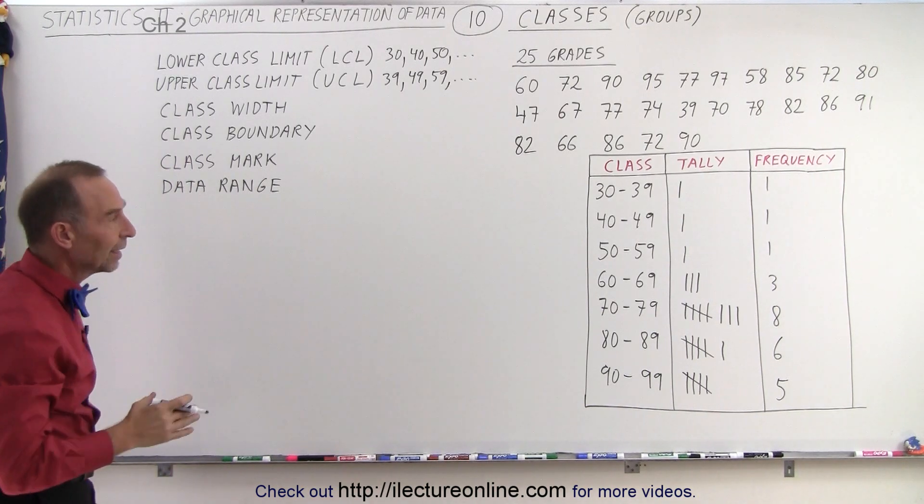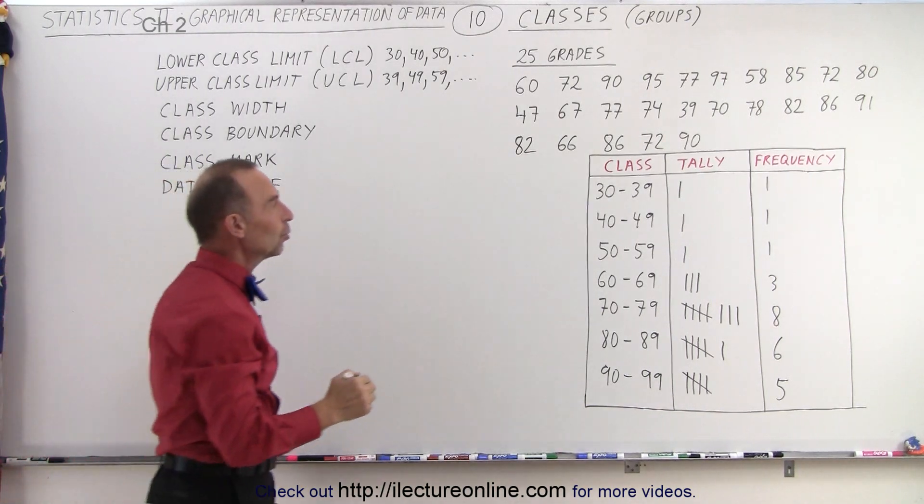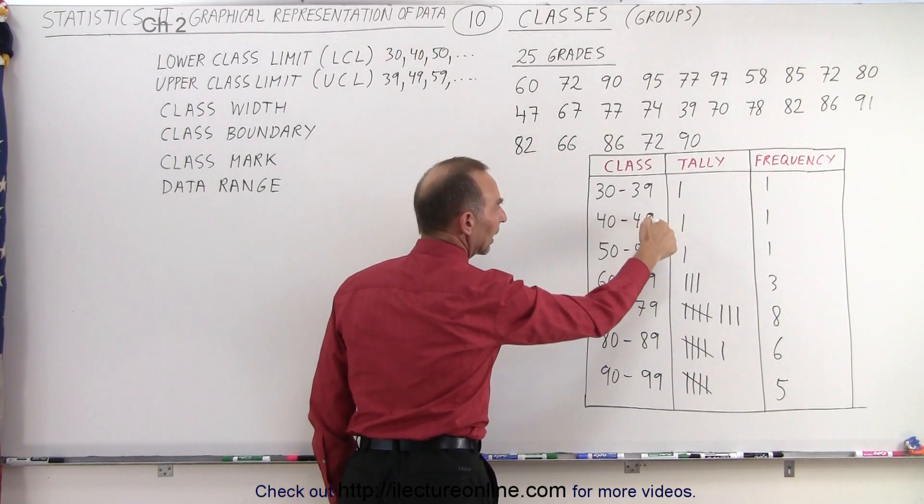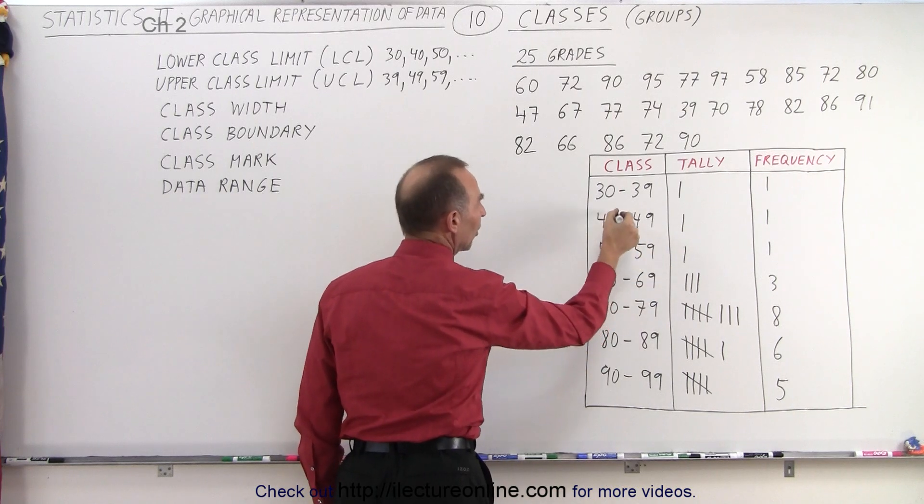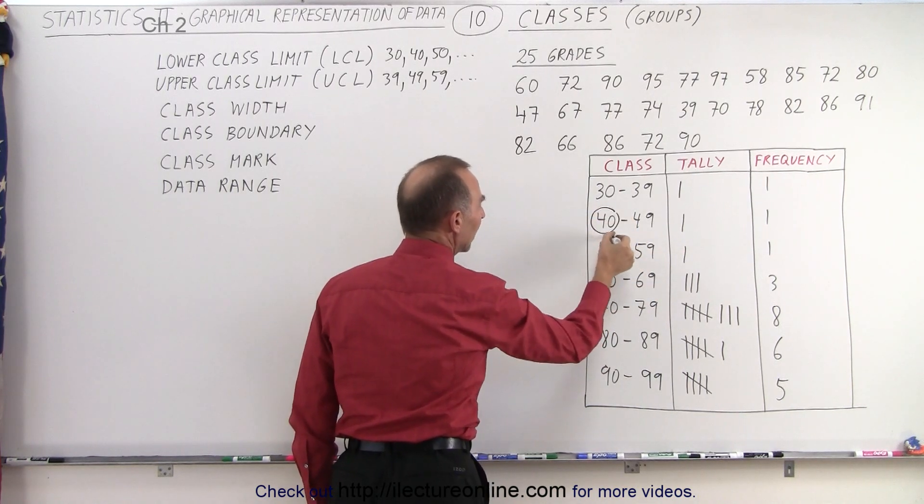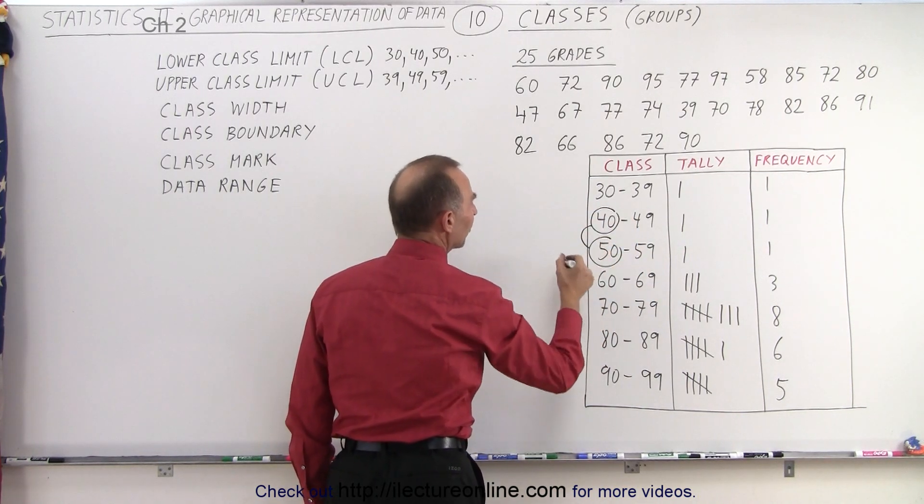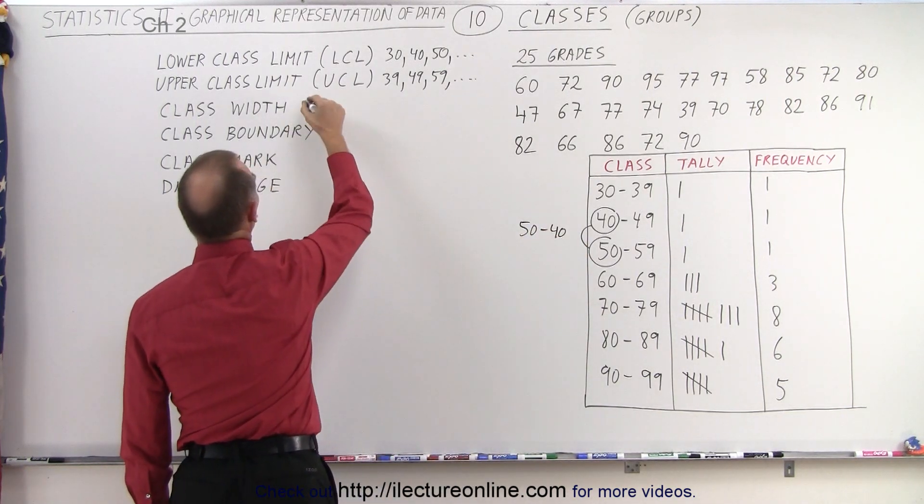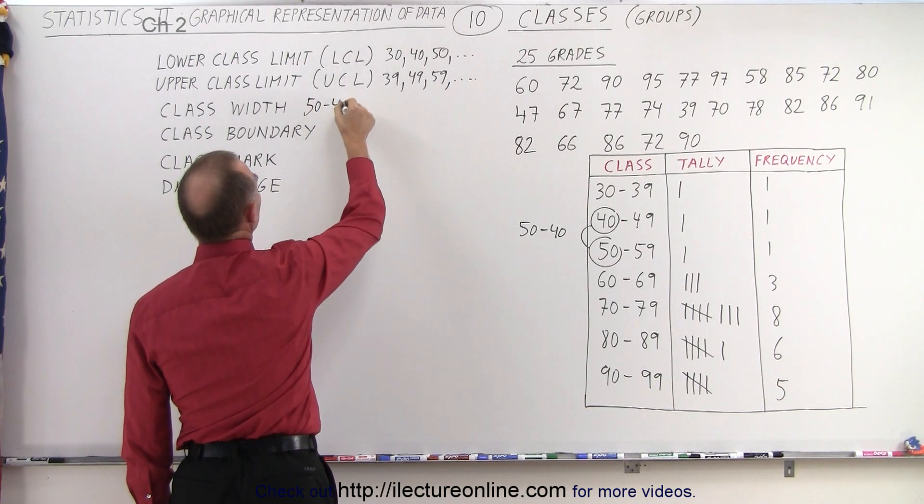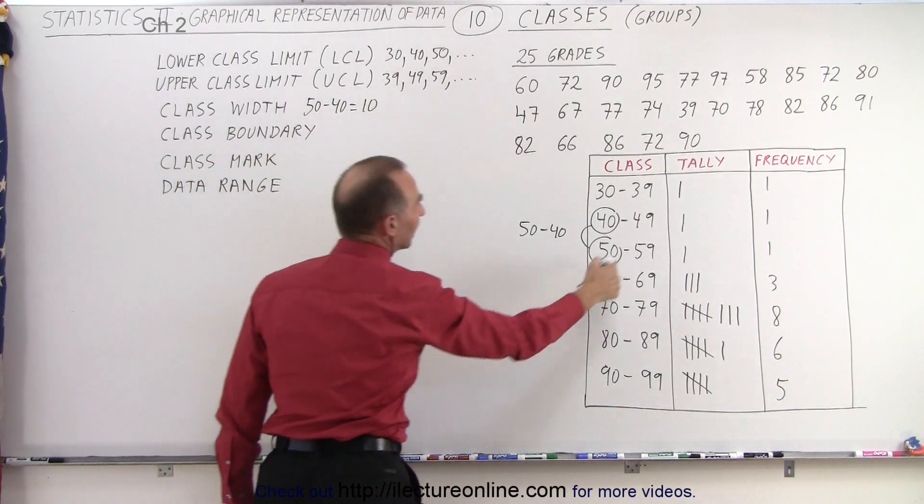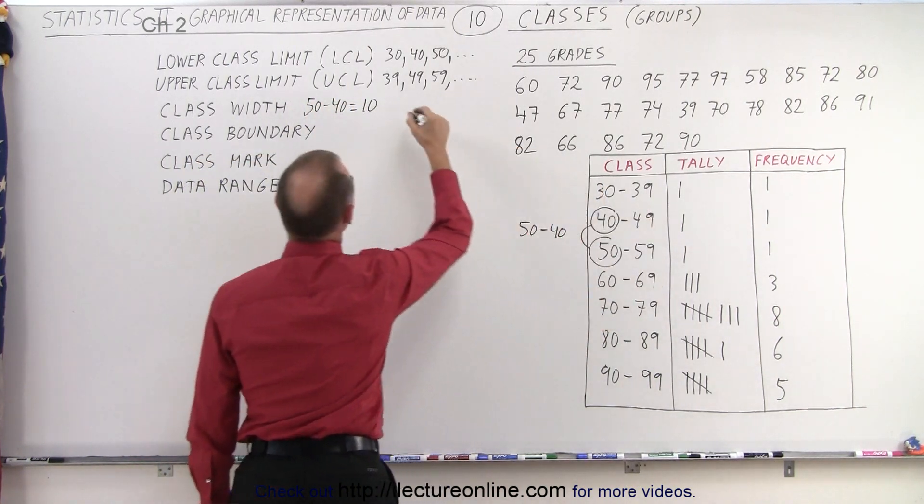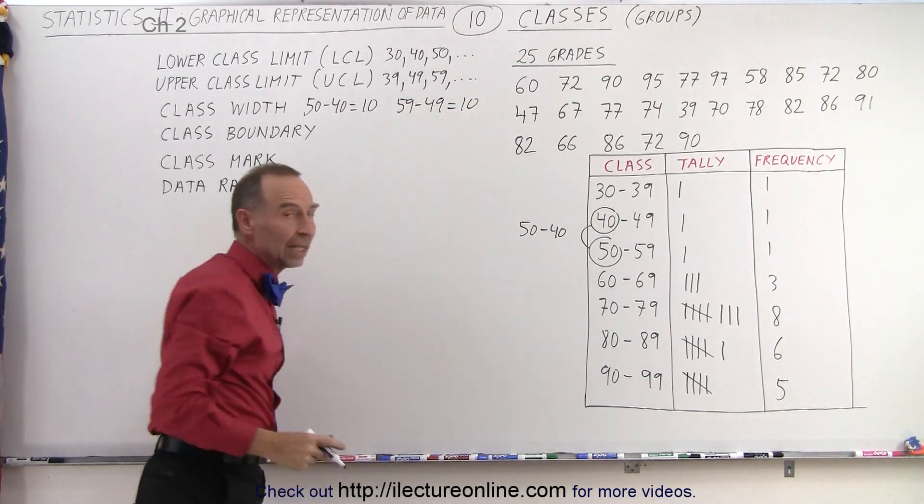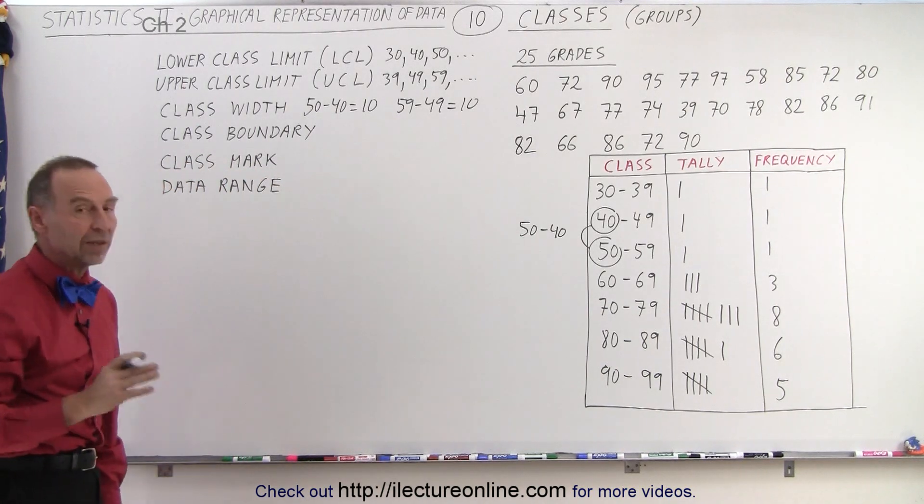The class width is the difference between the lower limit of one class to the lower limit of the next class, or the upper limit of one class to the upper limit of the next class. So we take this value here and this value and we take the difference. So 50 minus 40, that would be considered the class width. So 50 minus 40 equals 10, or we could take 59 minus 49, and we get the same class width. So that would be the width of each class.